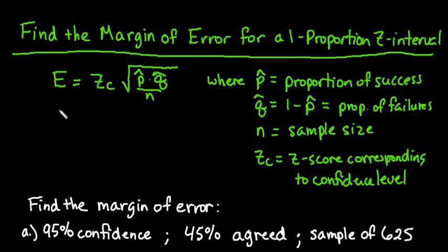For this video, I want to demonstrate how to find the margin of error for a one-proportion z-interval. When dealing with confidence intervals, we always start with a point estimate. The point estimate for a proportion is the sample proportion. After we find our point estimate, we add and subtract our margin of error, so it's important to be able to find it.